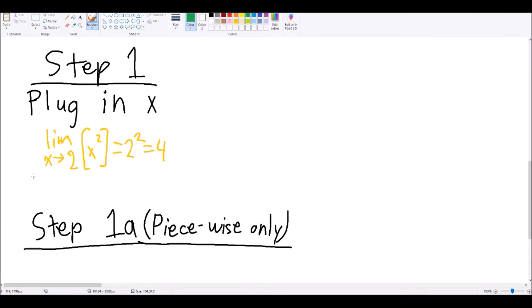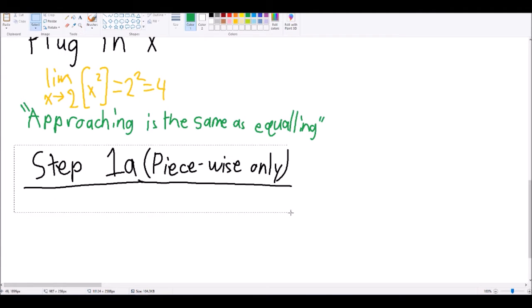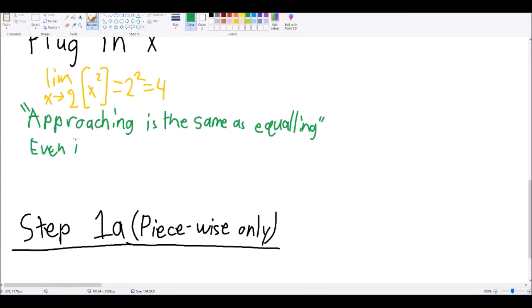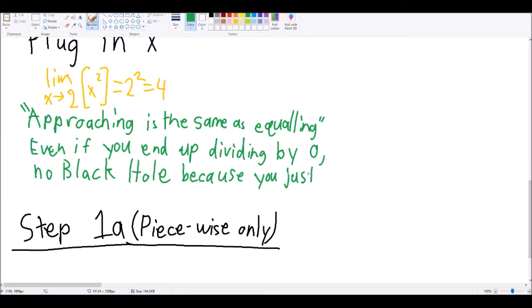In this case, we're saying that approaching the value is the same as equaling. Now, think of the limit as a safety rope. Even if you end up dividing by 0, it's not going to create a black hole, because you can just as easily say approaching 0 is not the same as equaling 0.